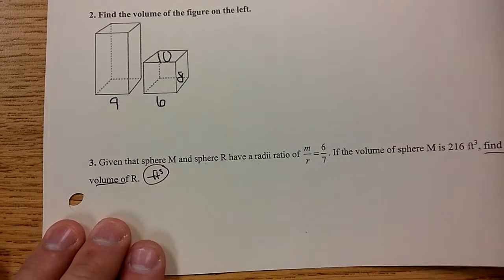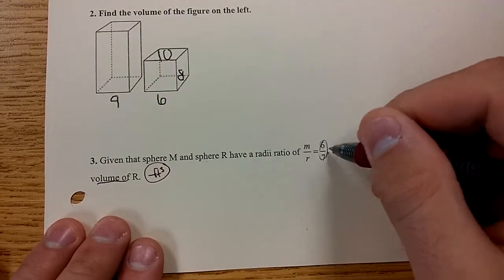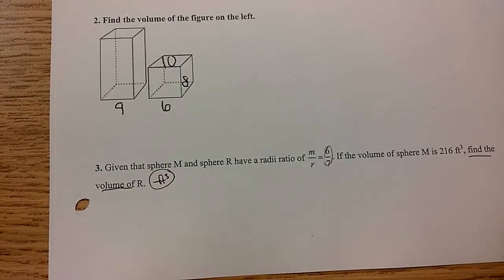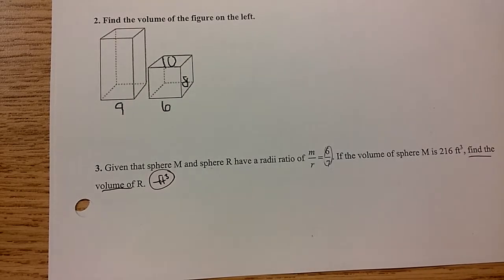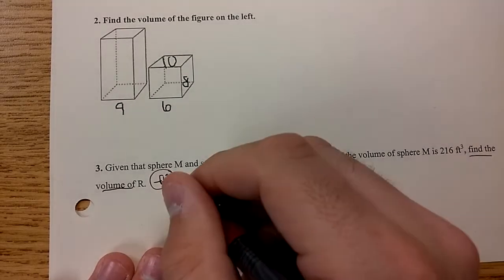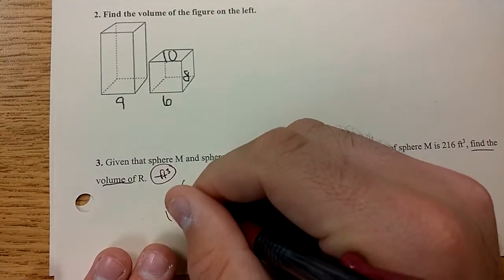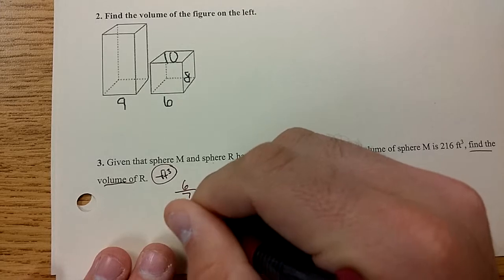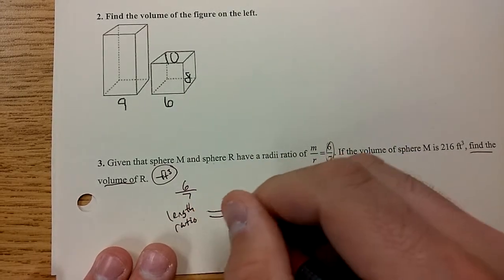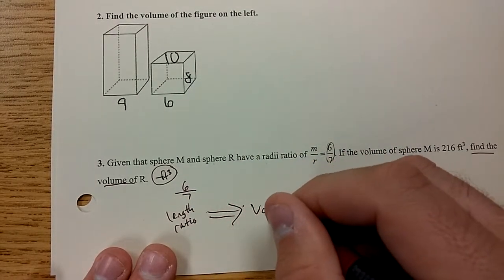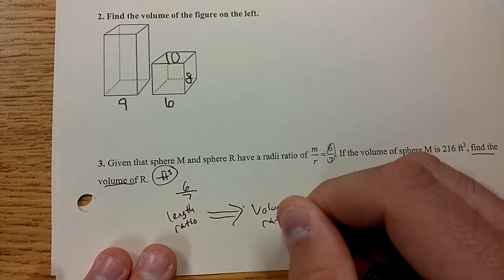So this right here, even though it's a 3D figure and the radii is inside the sphere, is a single dimension ratio. We call it the side length ratio for polygons. So if you're given this, a length ratio, and you want to turn it into a volume ratio, because you're finding volume here, you need to cube it.